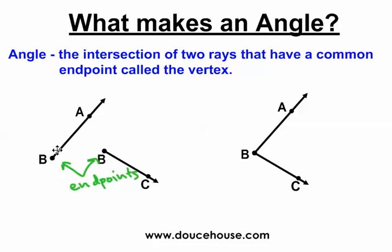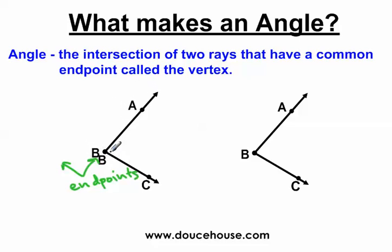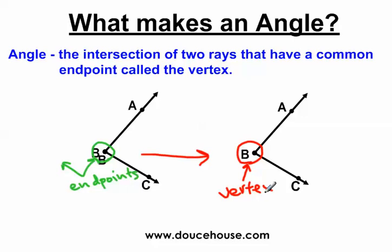If I take ray BA and ray BC and overlap their endpoints, these two rays now have a common endpoint. Where ray BA and ray BC are intersecting, this is called the vertex. It's really important you know what a vertex is because we use it to name angles. We talk about angles throughout the year in geometry, so it's worthwhile to understand what an angle is and what the vertex is.